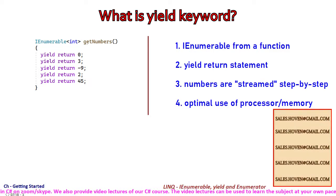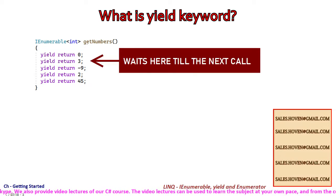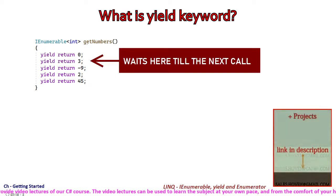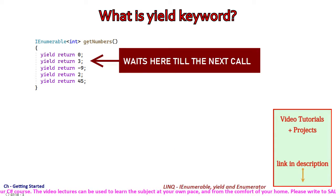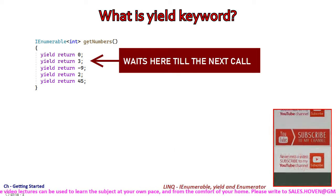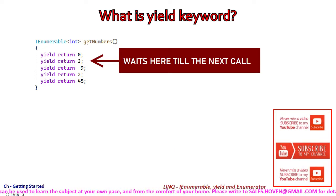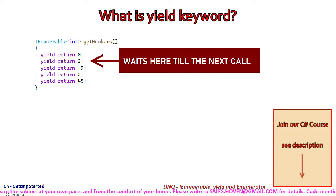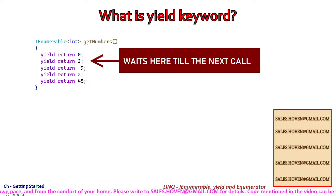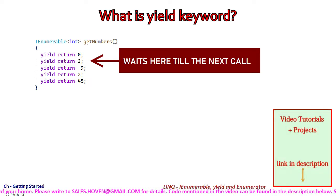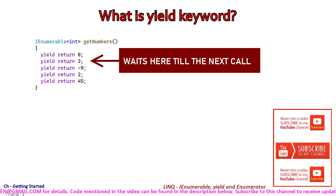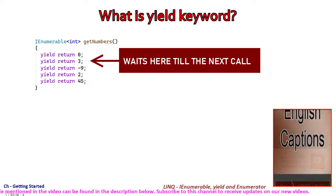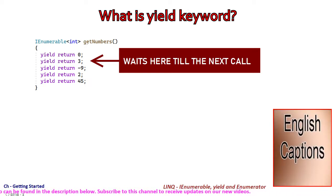Let me explain how the steps take place. Execution proceeds till the first yield statement; the data is returned to the caller and execution is suspended. The execution resumes at the next yield statement when the next iteration takes place. This sequence of suspend and resume siphons out the numbers step by step, optimizing the use of processor and memory.